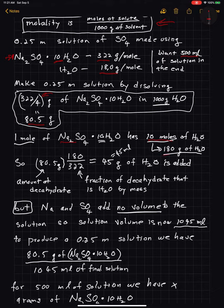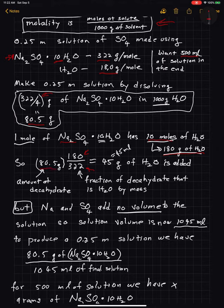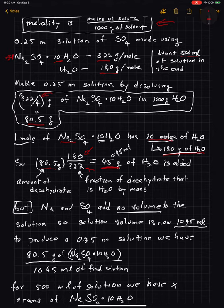10 moles of water is 180 grams of H₂O. So that means I have 180 grams of water in every 322 grams — one mole — of decahydrate. So when I add 80.5 grams of decahydrate to water, I'm adding additional water in addition to the sodium ions and the sulfate ions. In particular, it's 80.5 times the fraction that is water — so it's 180 divided by 322 times 80.5. So immediately I'm increasing the amount of water in the solvent by 45 grams.